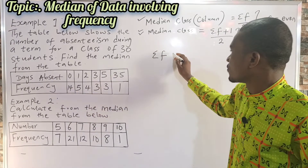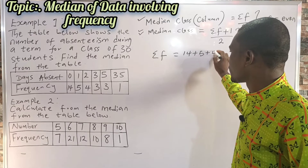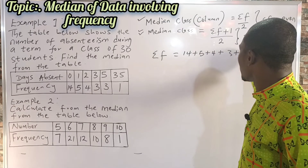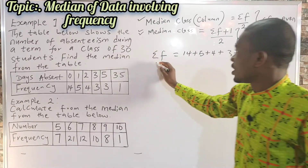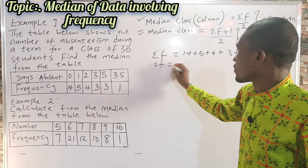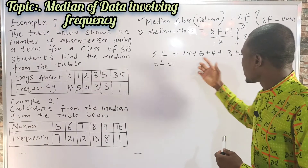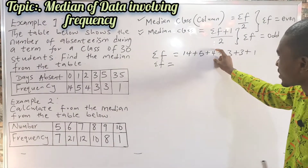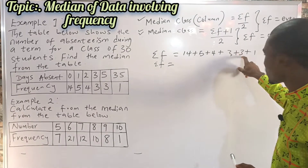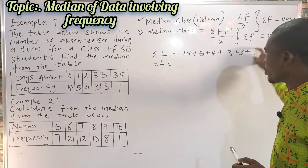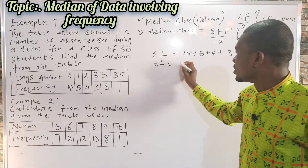Summing the frequencies: 14 + 5 + 4 + 3 + 3 + 1. That gives us 14 + 5 = 19, then 19 + 4 = 23, then 23 + 3 = 26, then 26 + 3 = 29, and 29 + 1 = 30. Hence, the summation of our frequency is 30.